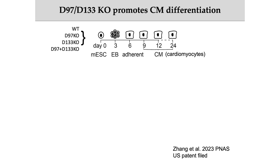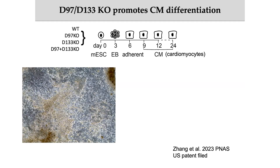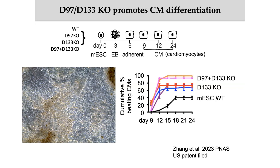To test whether these two snoRNAs regulate development and differentiation, we used mouse embryonic stem cells and generated single-knockout cell lines of these two snoRNAs and differentiated mouse stem cells into cardiomyocytes. A successfully differentiated cardiomyocyte will beat, as shown here. To detect the effect of these two snoRNAs on cardiomyocyte differentiation, we counted beating cardiomyocytes every three days starting on day nine.